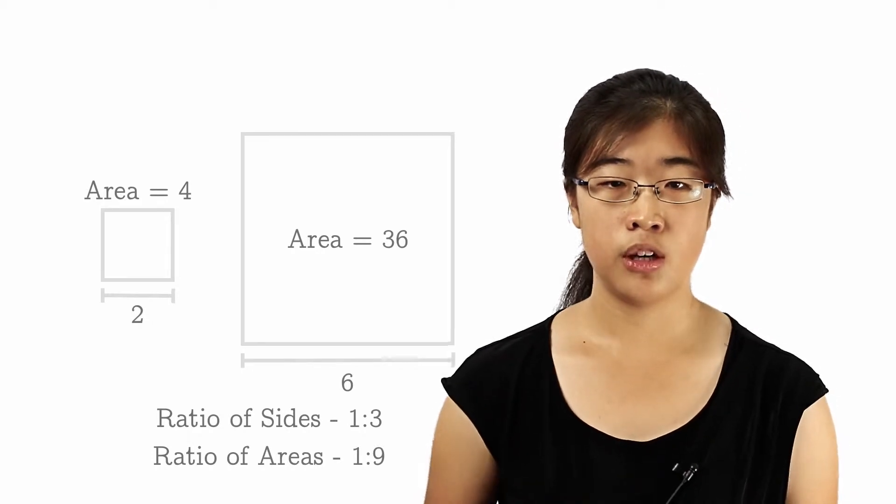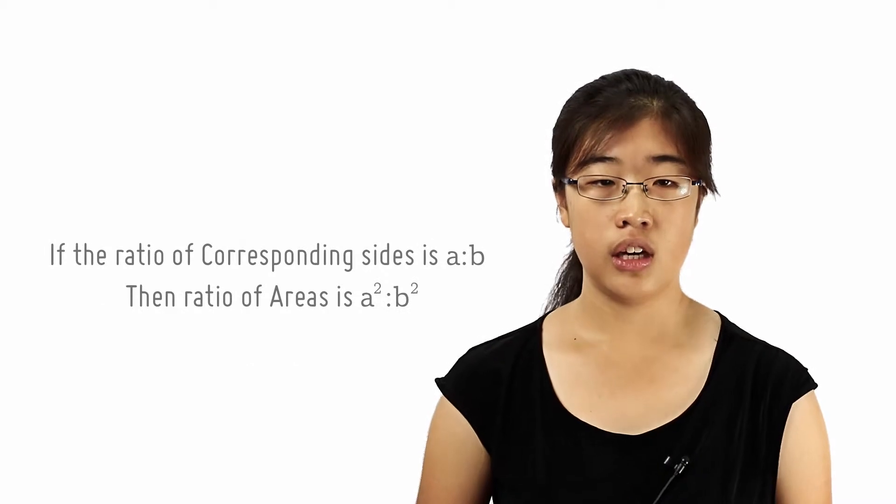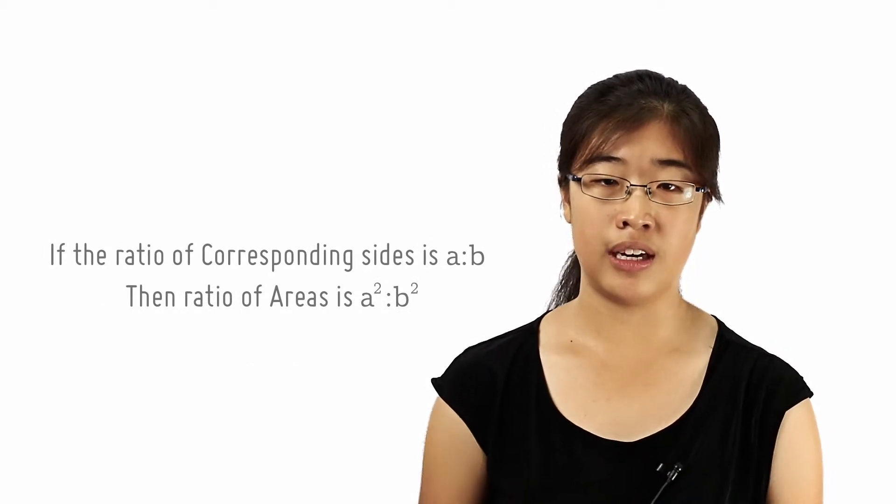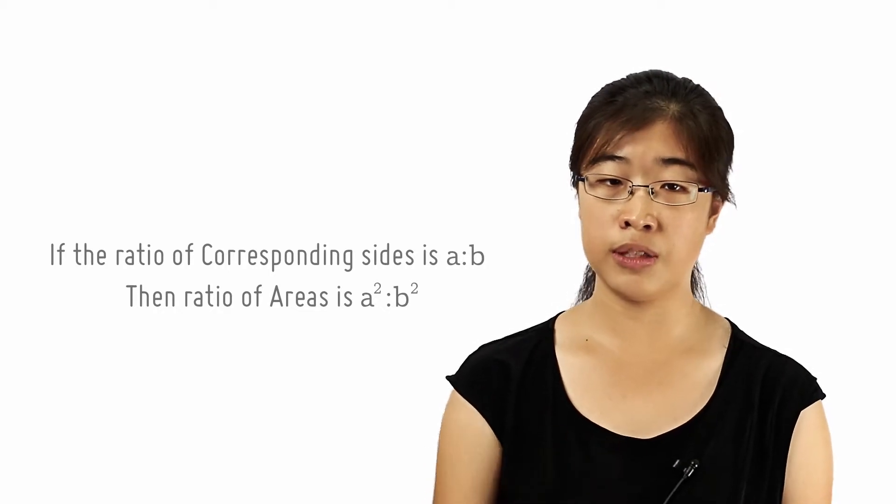From these two examples, you should be able to spot a pattern that for two similar plane figures, if the ratio of their corresponding sides is A to B, then the ratio of their areas is A squared to B squared.